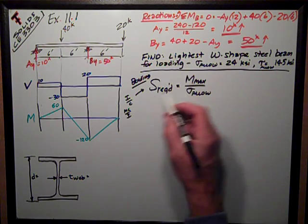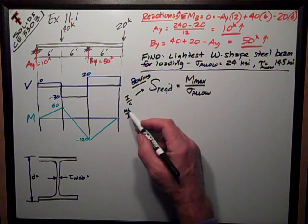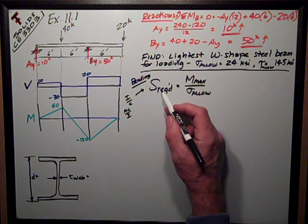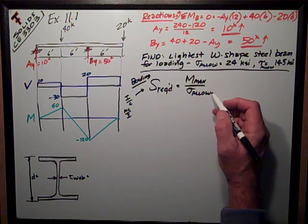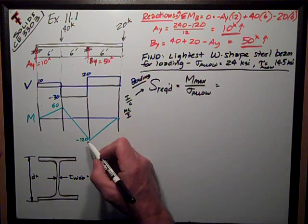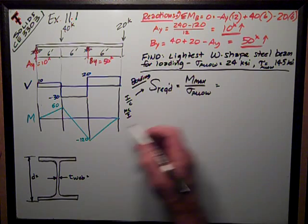So, this is really just a rewriting of this formula right here, MC over I, and rearrangement. So, my section modulus required is my maximum moment divided by my allowable stress. So, my maximum moment is this negative 120.